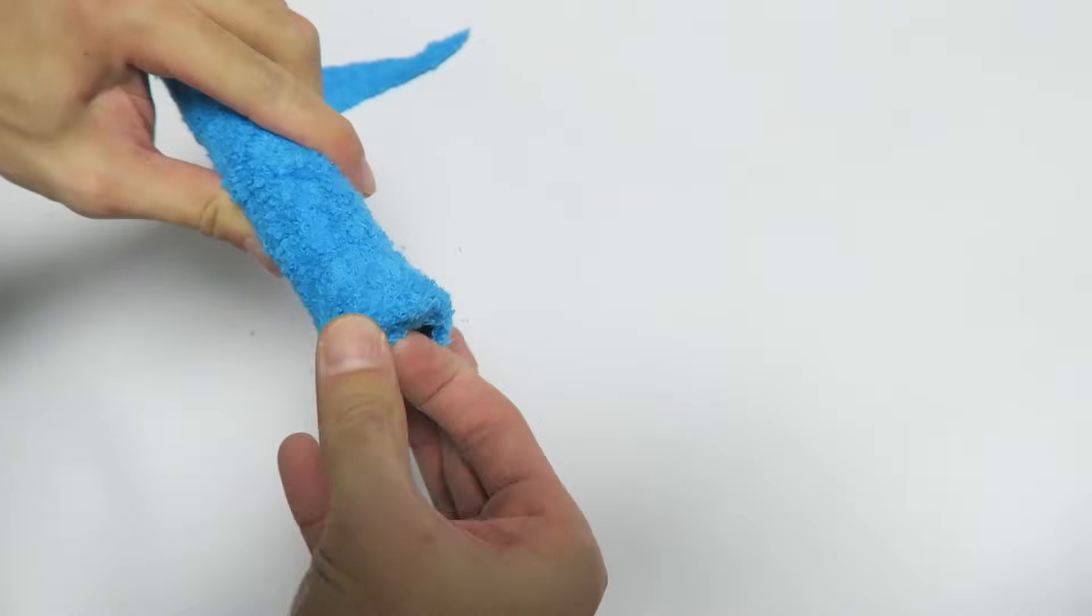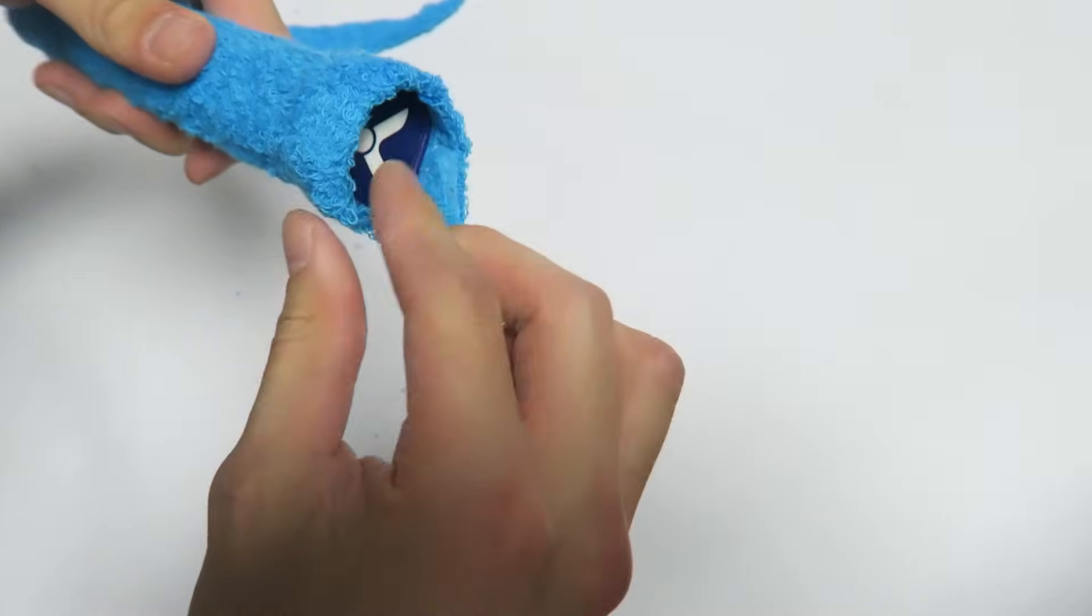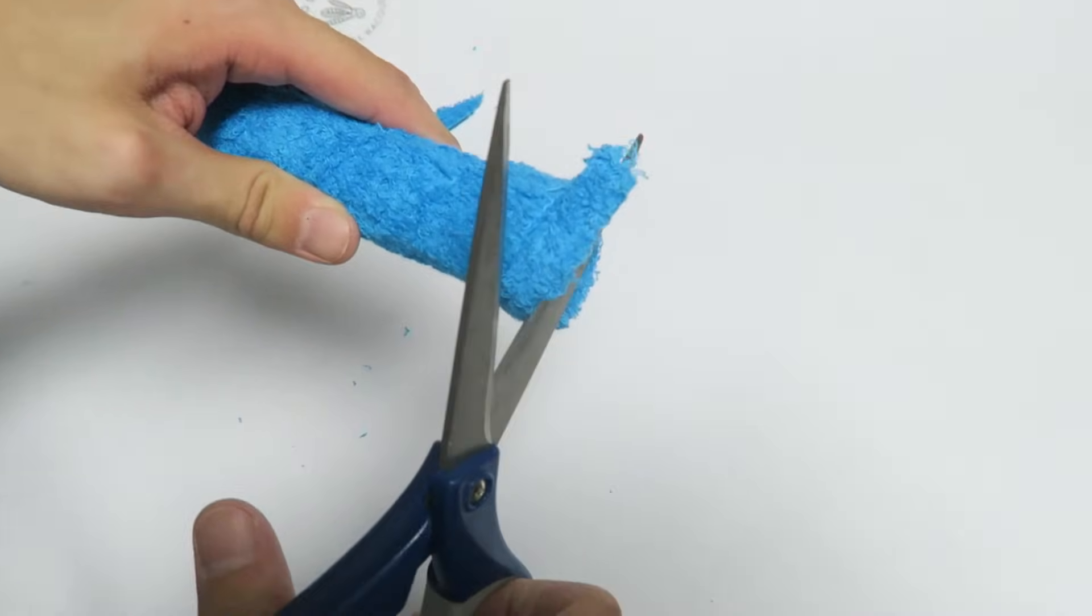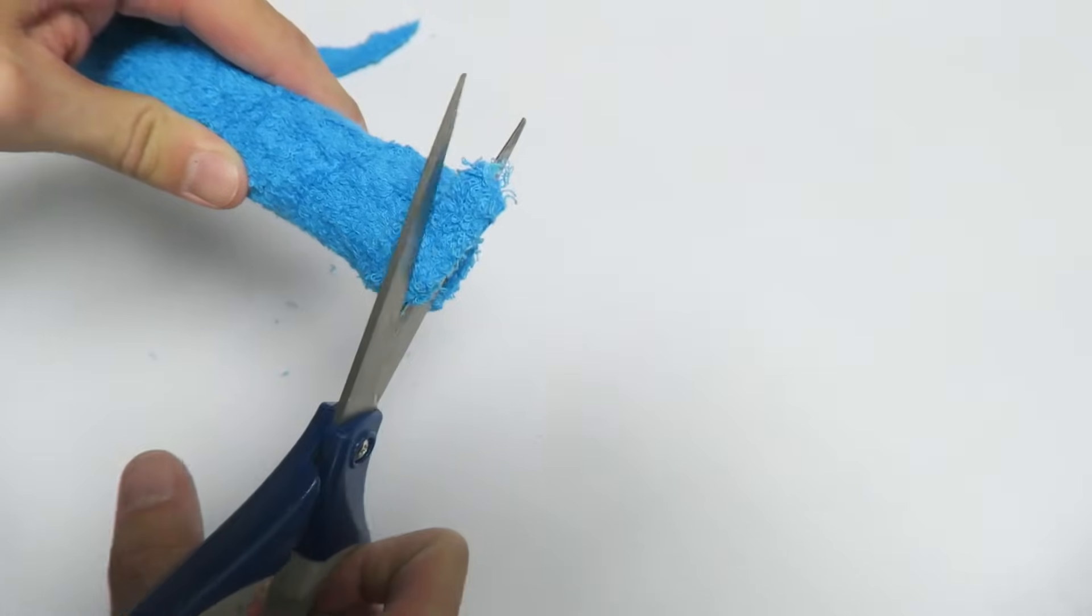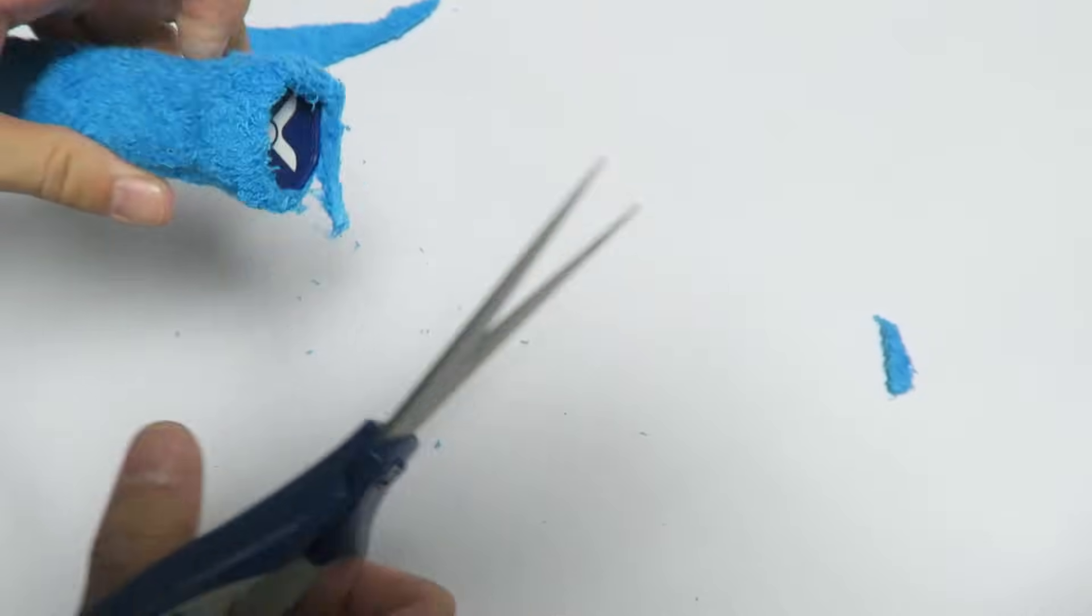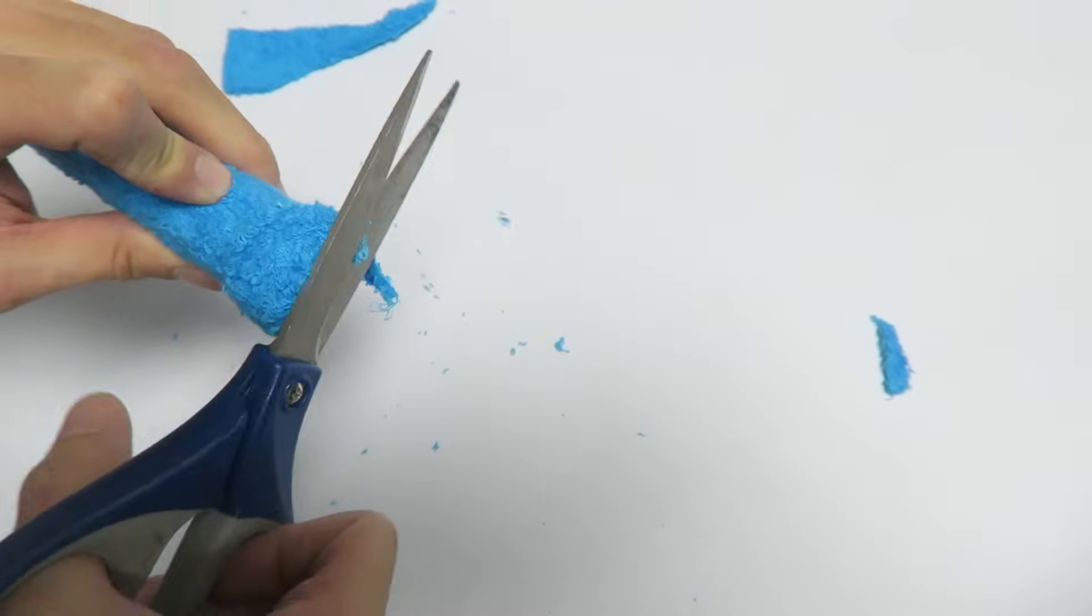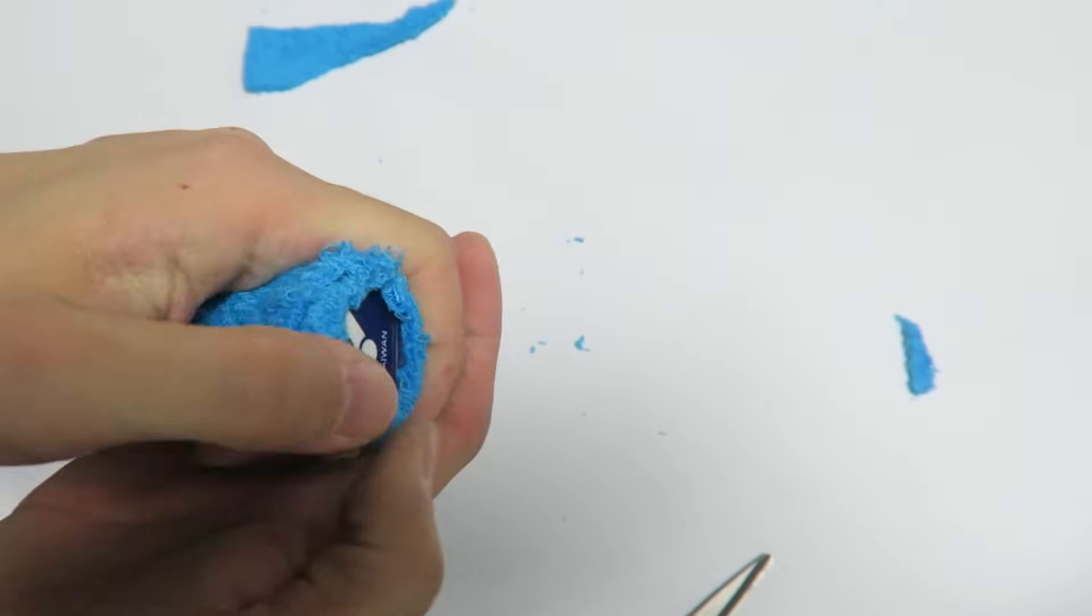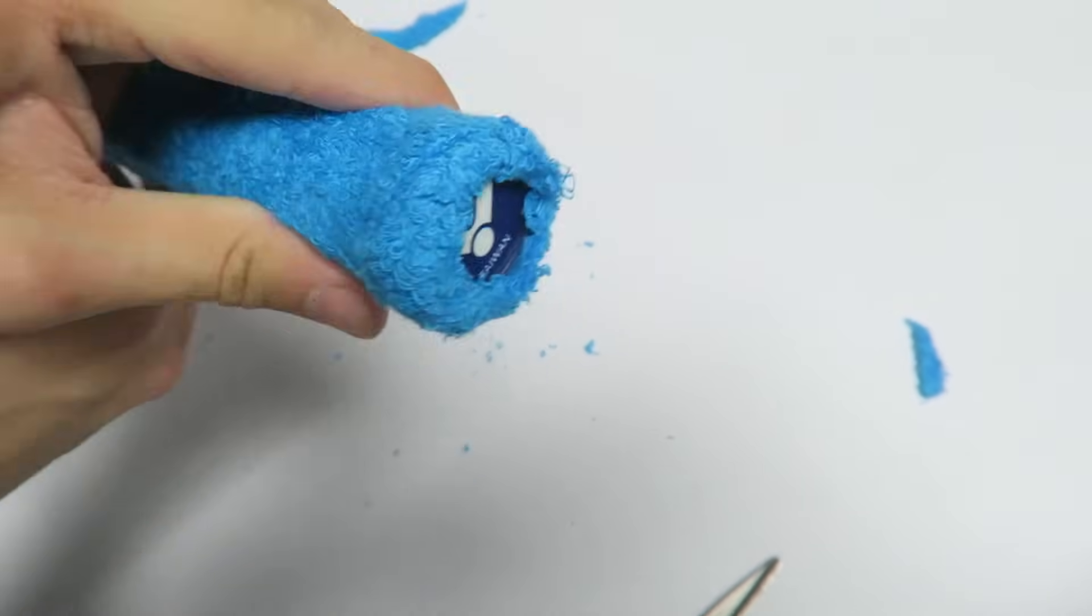Or if you want to cut it off you can just get a pair of scissors. Just align it with the edge of the grip and then just cut it off. Just give it a good trim and then you can press down the remaining grip.